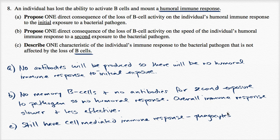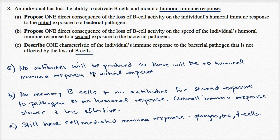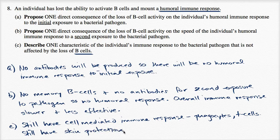You still have T cells that can recognize the antigen and try to destroy it. You also have physical barriers like the skin, which block pathogens from entering the body — that's also considered part of the immune system. Even without B cell capability, the body can still prevent pathogen entry via the skin, and once pathogens get in, can still recognize, engulf, and destroy them through the cell-mediated immune response.